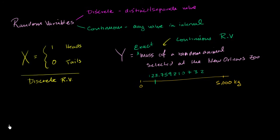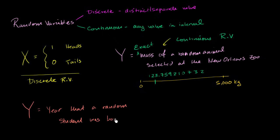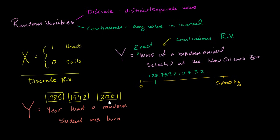Let's think about another one. Let's say random variable Y, instead of mass, is the year that a random student in a class was born. Is this a discrete or a continuous random variable? Well, that year — you can literally define it as a specific discrete year. It could be 1992, or 1985, or 2000, or 2001. There are discrete values that this random variable can actually take on.